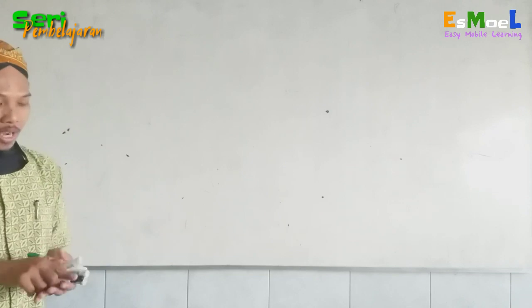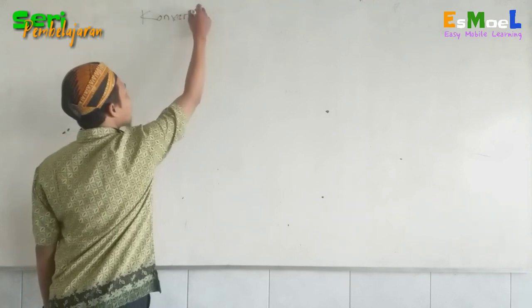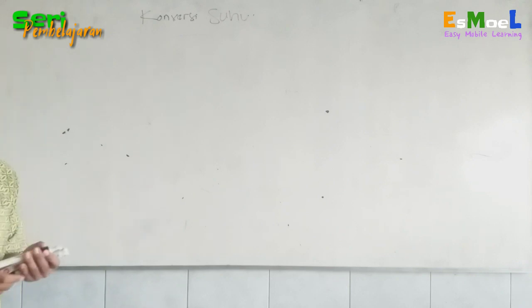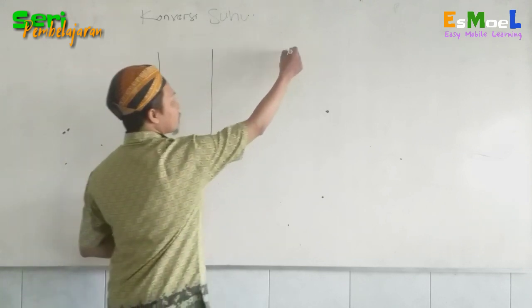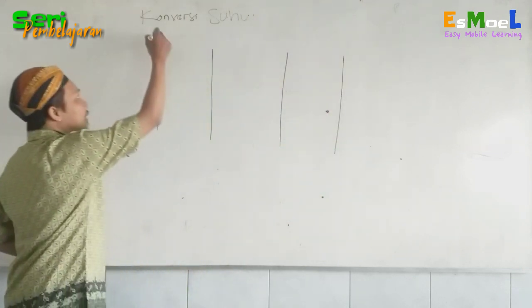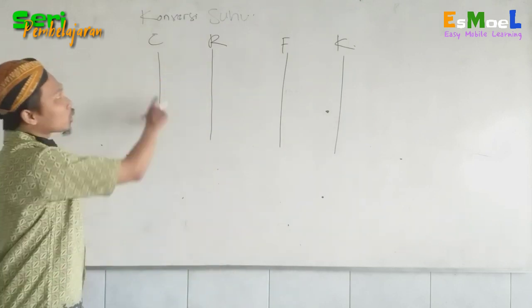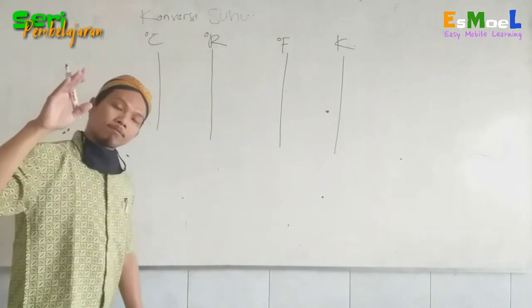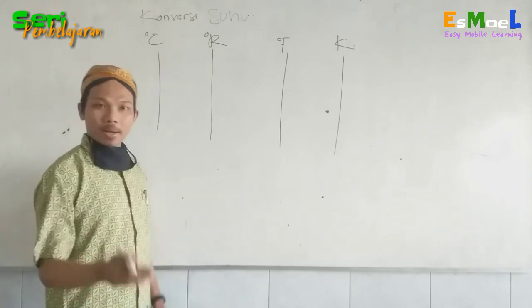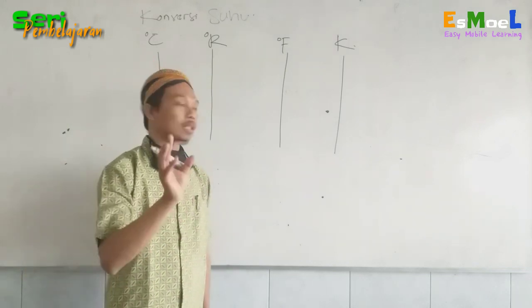Pada kesempatan ini saya akan sampaikan materi tentang konversi suhu. Di sini nanti ada nilai yang disebut titik tetap atas dan titik tetap bawah. Di sini saya buat 4 termometer: ini anggap saja Celsius, ini Reamur, ini Fahrenheit, dan ini Kelvin. Untuk Celsius dan Fahrenheit ini sebenarnya ada derajatnya. Karena di sini ada satu satuan SI atau standar internasional untuk suhu yaitu apa? Yap, benar sekali Kelvin. Di situ tidak ada simbol derajatnya.